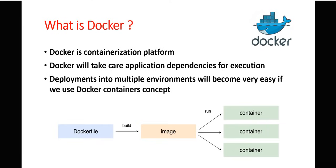To run Docker containers we need Docker Engine installed on our machine — Windows, Mac, or Linux. Once Docker Engine is installed, we can run Docker containers using Docker images. All required dependencies are handled by Docker, so our application becomes portable and can run on any platform.